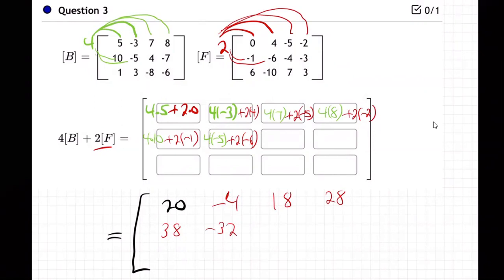Next one. Four times four and two times minus four. Four times four plus two times minus four, what's that? 16 minus eight, that's eight.